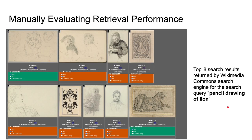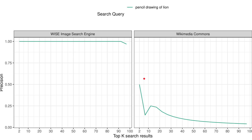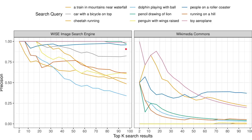In order to quantitatively evaluate the retrieval performance of WISE, we construct a custom benchmark. We manually review the search results returned by both WISE and the Wikimedia Commons search engines. For example, here we show the top eight search results returned by the Wikimedia Commons search engine for the query "pencil drawing of lion." We then use an annotation tool to mark whether each image was correct or not given the search query. Using that, we can plot the precision curve showing the value of precision for different values of top-k. Here we show the precision curve for nine different queries, and as you can see, the WISE search engine has higher precision overall for these queries compared to the Wikimedia Commons search engine.